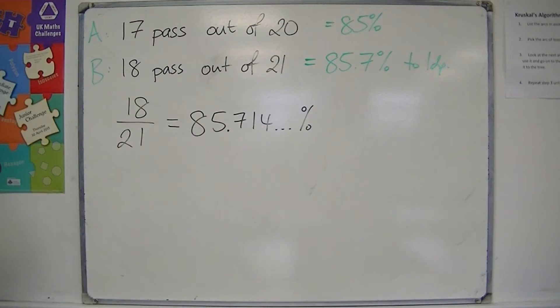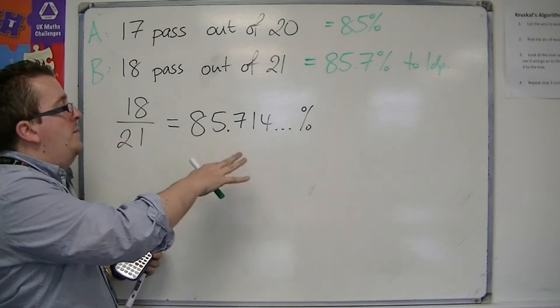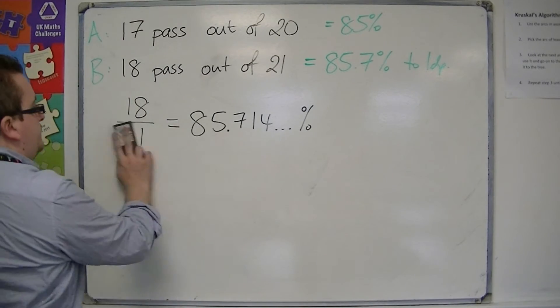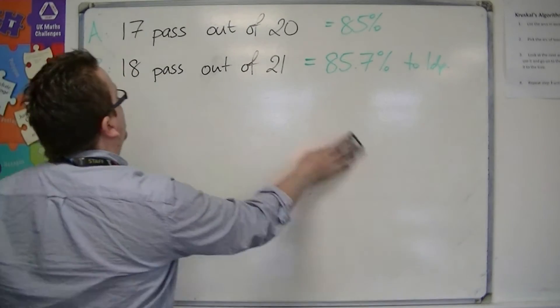So this is 85.7% to one decimal place. So you can do top divided by bottom and then multiply by 100 to turn it into the percentage. So that's class B.